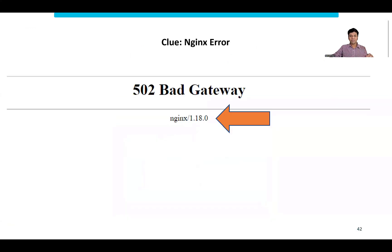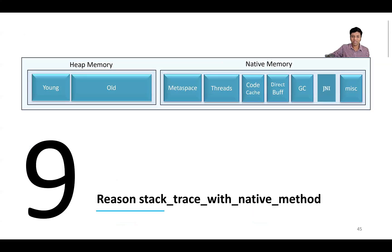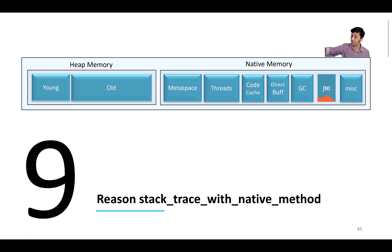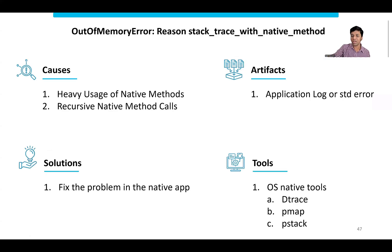The ninth type of out of memory error is 'recent stack trace with native method.' This only happens if you use JNI — directly connecting a Java application with a C or C++ process. If anything happens to your thread making a call to JNI, you get this error. Typically 99.99% of us are not using JNI so we don't have to worry about it. But if you do encounter it, you need to use operating system native tools like DTrace, PMAP, and PStack.